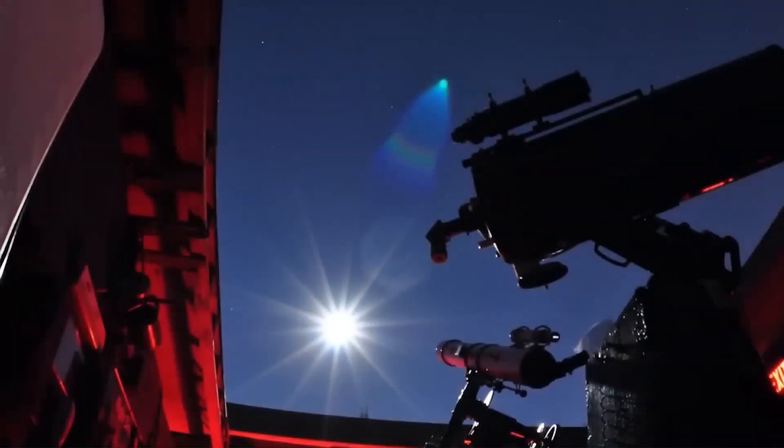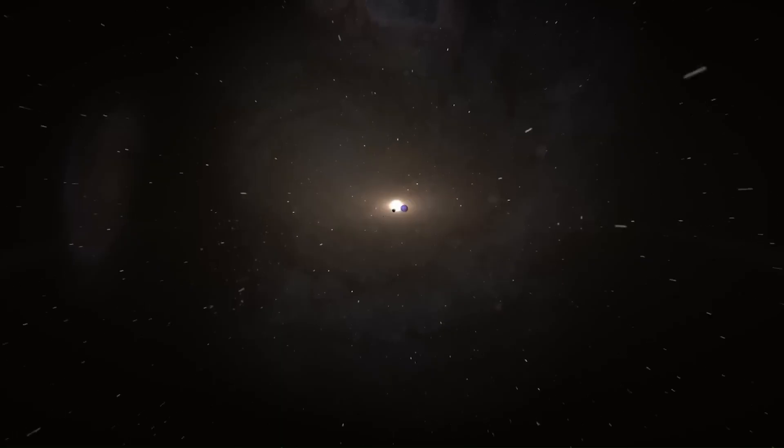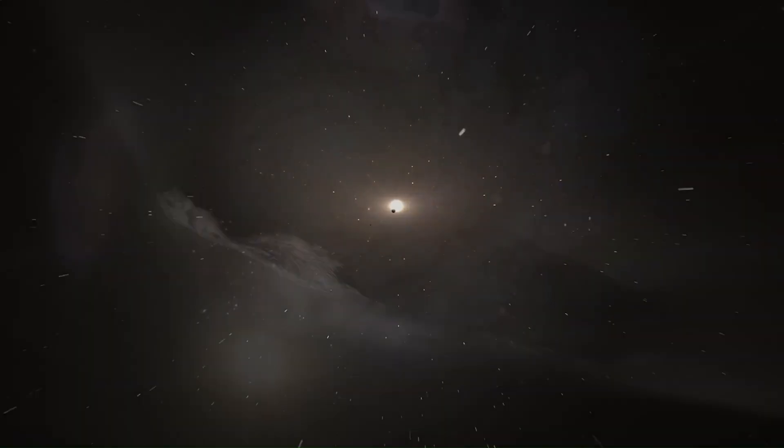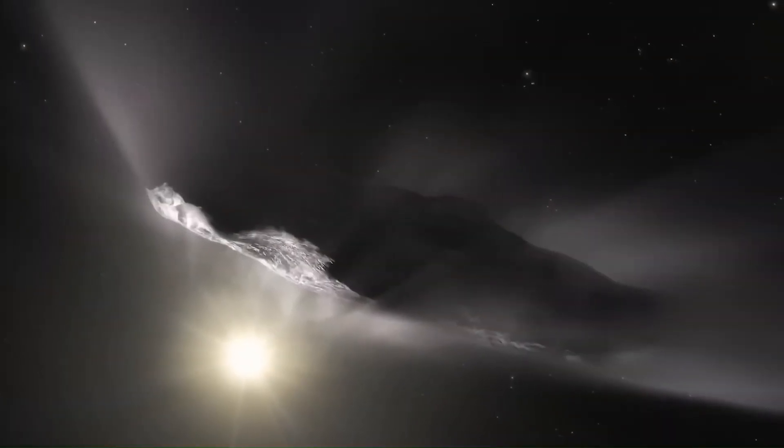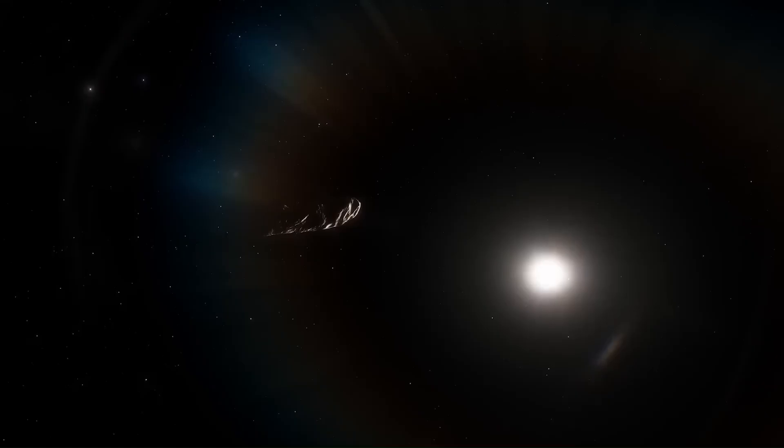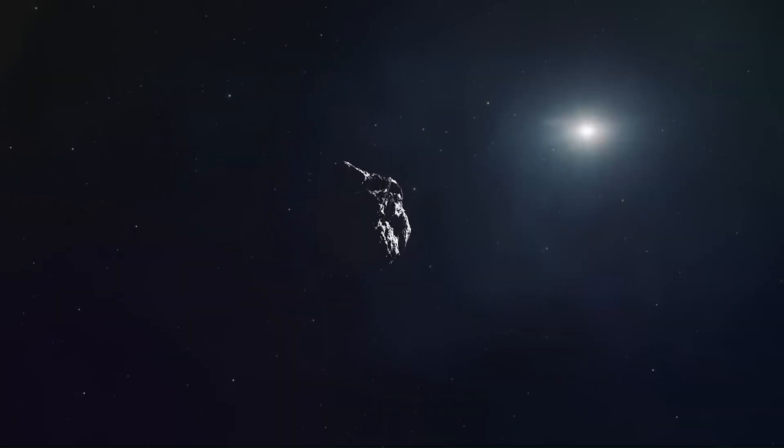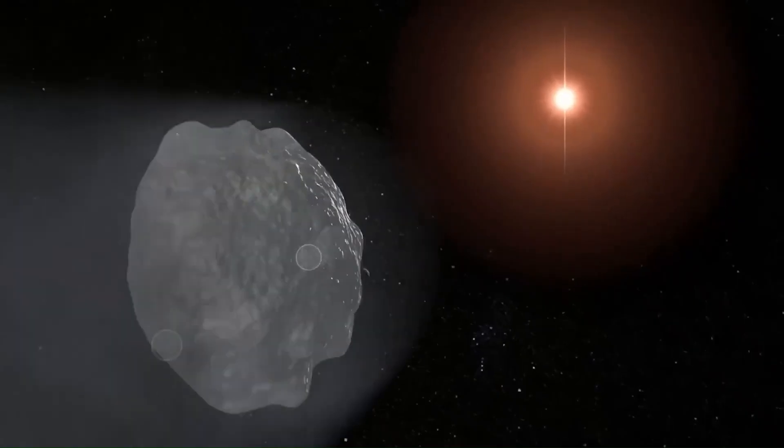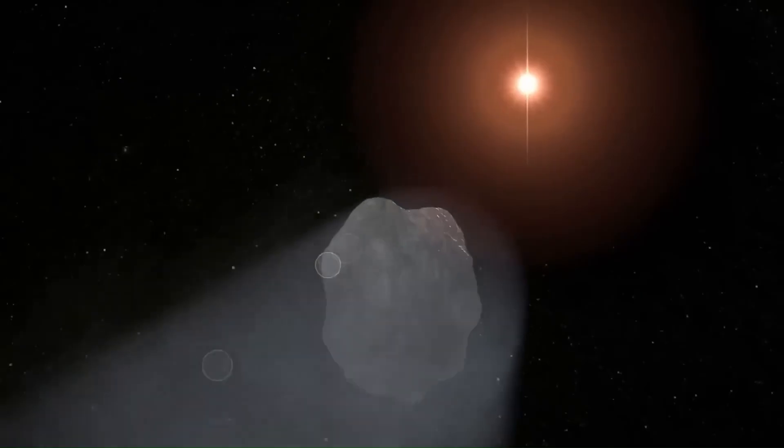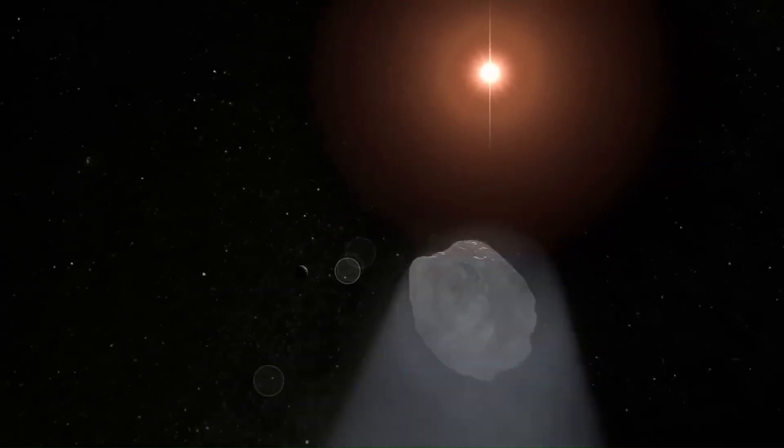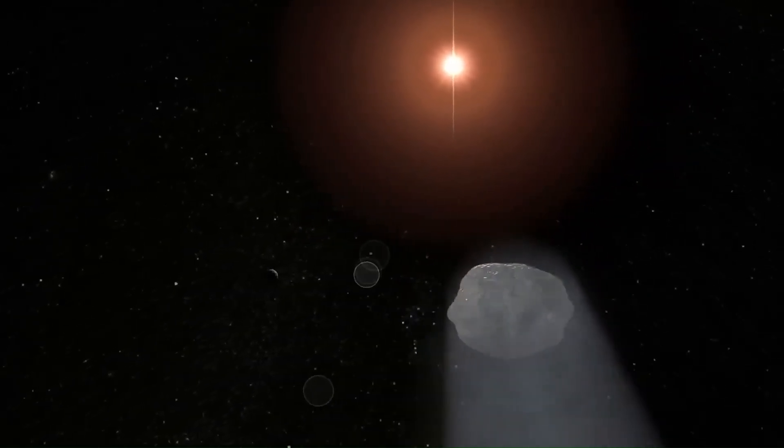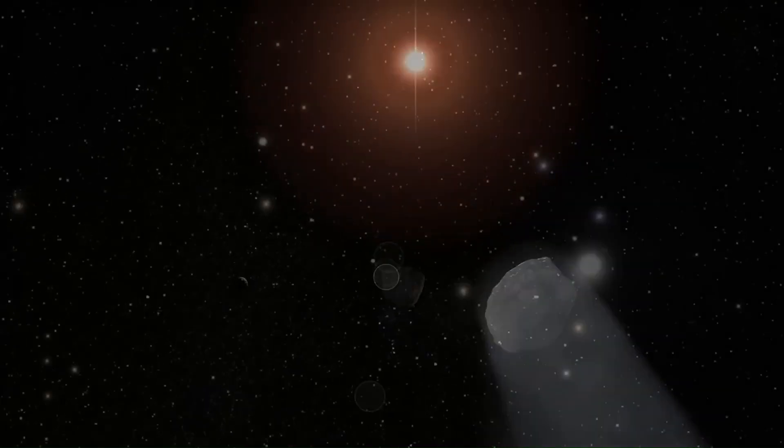It accelerated in a way gravity alone couldn't explain, but showed no sign of the usual gas jets that push comets. It also had a steady rotation, which fits with being pushed by sunlight, solar radiation pressure rather than gas release. On top of that, its orbit had several rare traits: alignment with the galactic plane, motion almost at rest relative to nearby stars, and timing that brought it close to Earth with extreme precision. These factors led Loeb and others to suggest it might even be artificial.